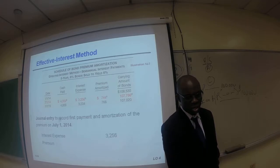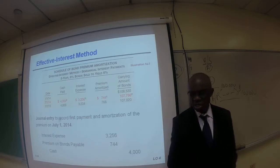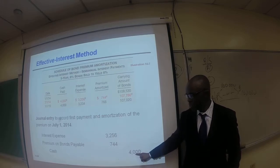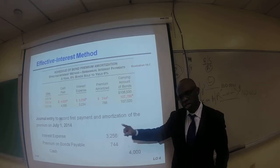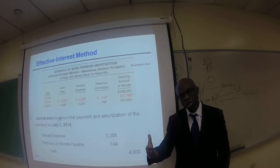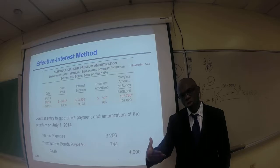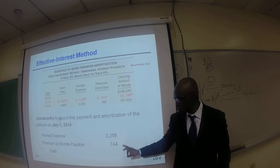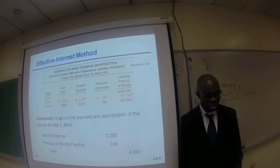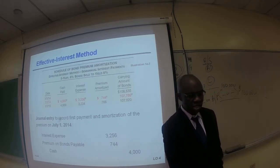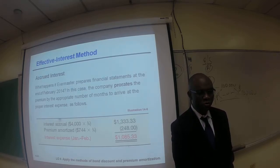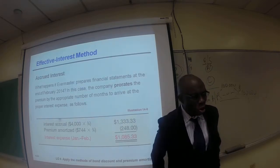Of course, we recognize the interest. The cash interest payment is credited for $4,000. The interest expense this time is lower than the cash interest expense because this bond was issued at a premium. So the amortization of premium reduces the interest expense — again, just the opposite of amortization of a discount.